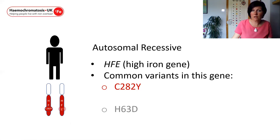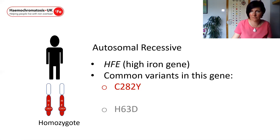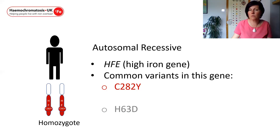If this man had inherited two copies of the C282Y, we would refer to this as being homozygous — homo meaning same — so he has two copies of the C282Y variant. In this case he would have two defective copies of the gene and therefore be at high risk of developing symptoms of hemochromatosis as an adult.